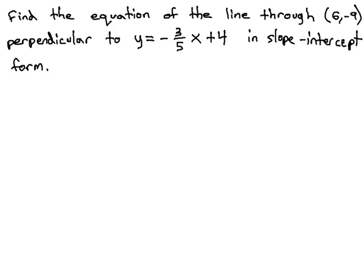In this video, we are asked to find the equation of a line that goes through the point (6, -9), but is also perpendicular to this other line, y = -3/5x + 4.